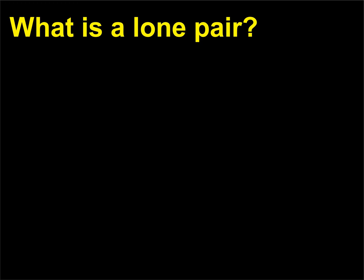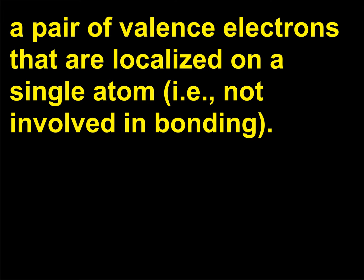What is a lone pair? A pair of valence electrons that are localized on a single atom — that is, not involved in bonding.